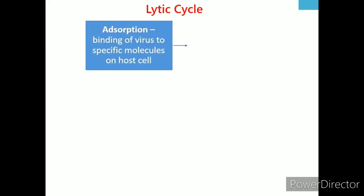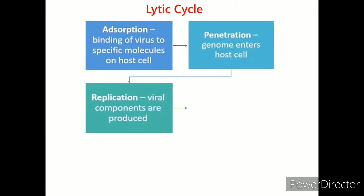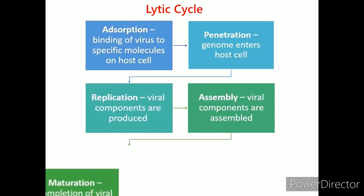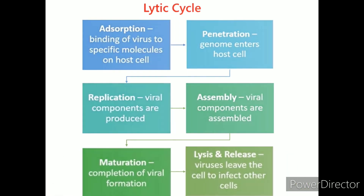The lytic cycle is one of the two life cycles of bacteriophages, where the viral DNA remains as a free-floating molecule and replicates separately from the bacterial DNA. The lytic cycle usually occurs in virulent phages, resulting in the destruction of the infected cell membrane during the release of viral particles. The lytic cycle contains the following steps: attachment, penetration, replication, assembly, maturation, and lysis and release.